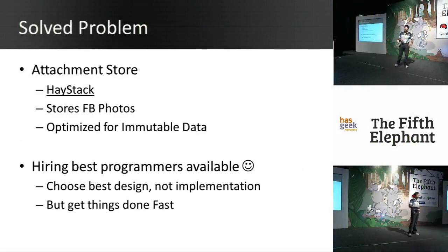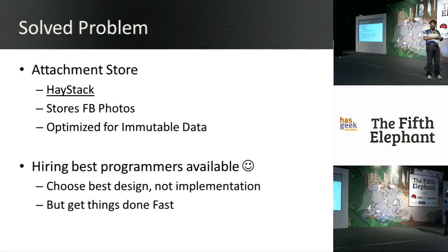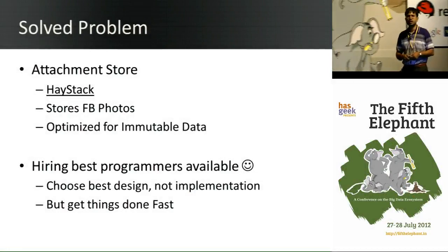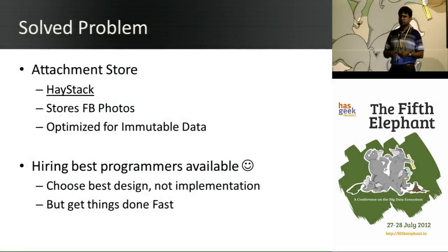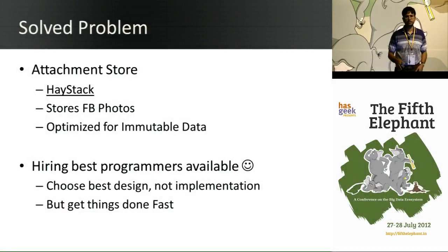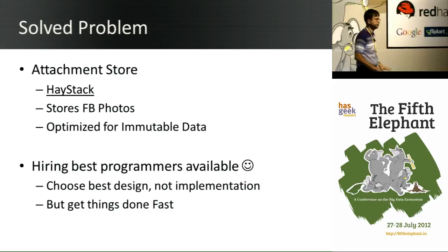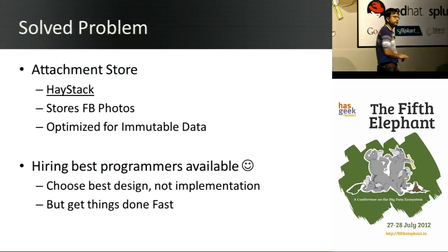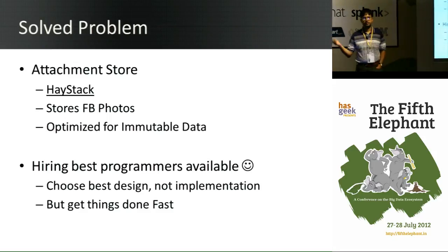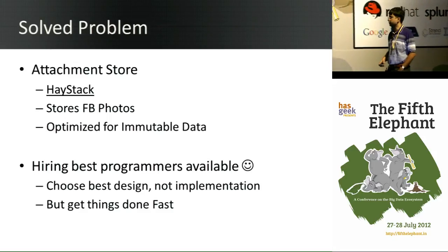Things we did not have to solve included photos and attachments. I just took that out of the equation because there's a system at Facebook already called Haystack — you can find documentation online. It's globally distributed, scales out linearly, and it's something they've perfected. Facebook is by far the largest photo store in the world. So the idea was: any attachment data, just throw it to Haystack and don't worry about that problem.